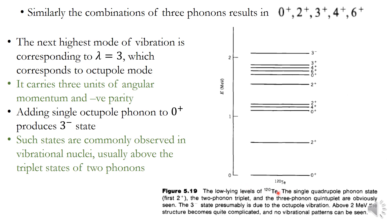Let us look at an example: Tellurium-120, which is an even-even nucleus. The ground state of the even-even nucleus is 0+. The first excited state arises from a single quadrupole phonon (2+), and the second excited states — 0+, 2+, and 4+ — arise from the combination of two quadrupole phonons.